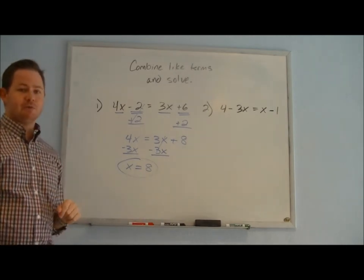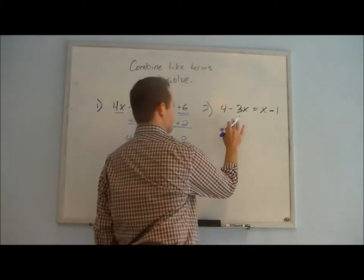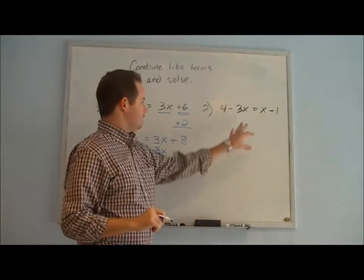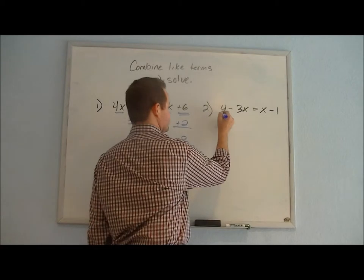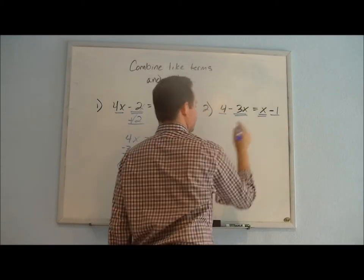Let's take a look at one more example just to make sure we're fully comfortable with approaching these kinds of problems. Here, if we take a look again, we have 4 and a negative 1, and then we have a negative 3x and an x.